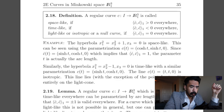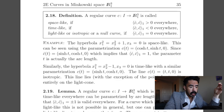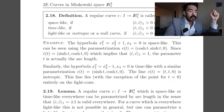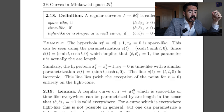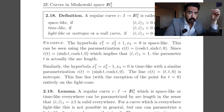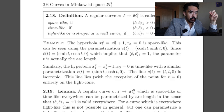A curve is time-like if the inner product of C-dot with itself is less than zero everywhere, or light-like (isotropic, null) if it equals zero everywhere. An example: the hyperbola X1² = X2² + 1, X3 = 0, is space-like, using the parameterization C(t) = (cosh t, sinh t, 0). Since C-dot(t) = (sinh t, cosh t, 0), the inner product of C-dot with itself equals 1, so t is the arc length. Similarly, the hyperbola X1² = X2² − 1, X3 = 0 is time-like. The line C(t) = (t, t, 0) is isotropic and lies entirely on the light cone (except at t = 0).